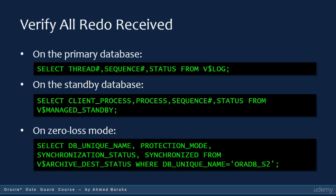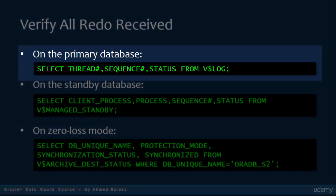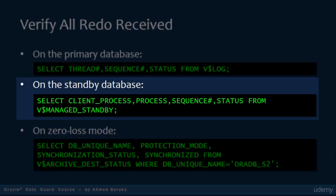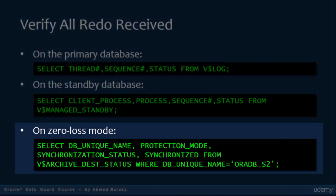I demonstrated in the previous lecture how to verify that all redo log files have been transported to a standby database. On the primary database, you get the maximum sequence number in V$ARCHIVED_LOG and compare it to the sequence number in V$MANAGED_STANDBY. If your Data Guard is operating in zero data loss mode, check the V$ARCHIVE_DEST_STATUS view and make sure the SYNCHRONIZED column shows YES for your standby database.